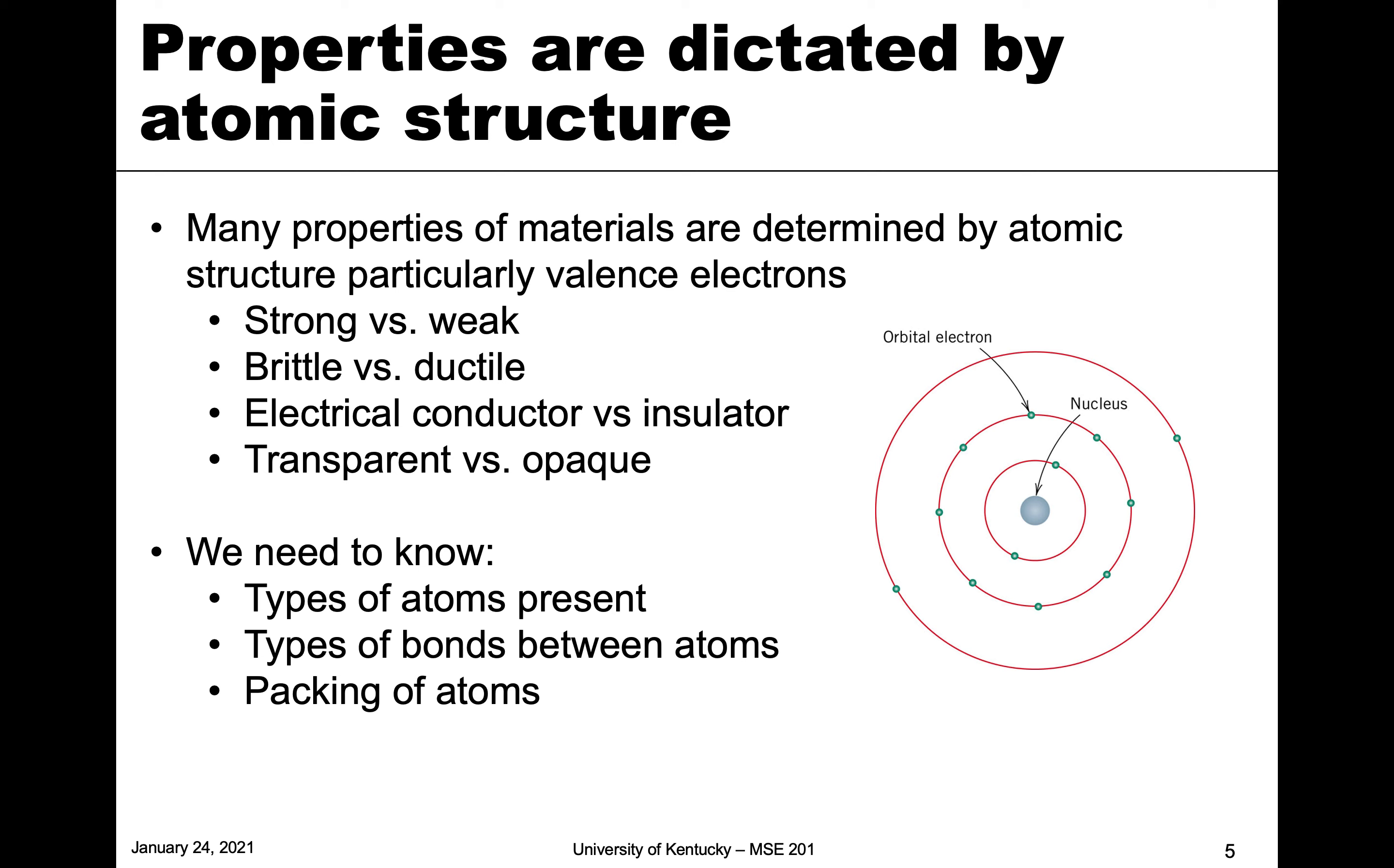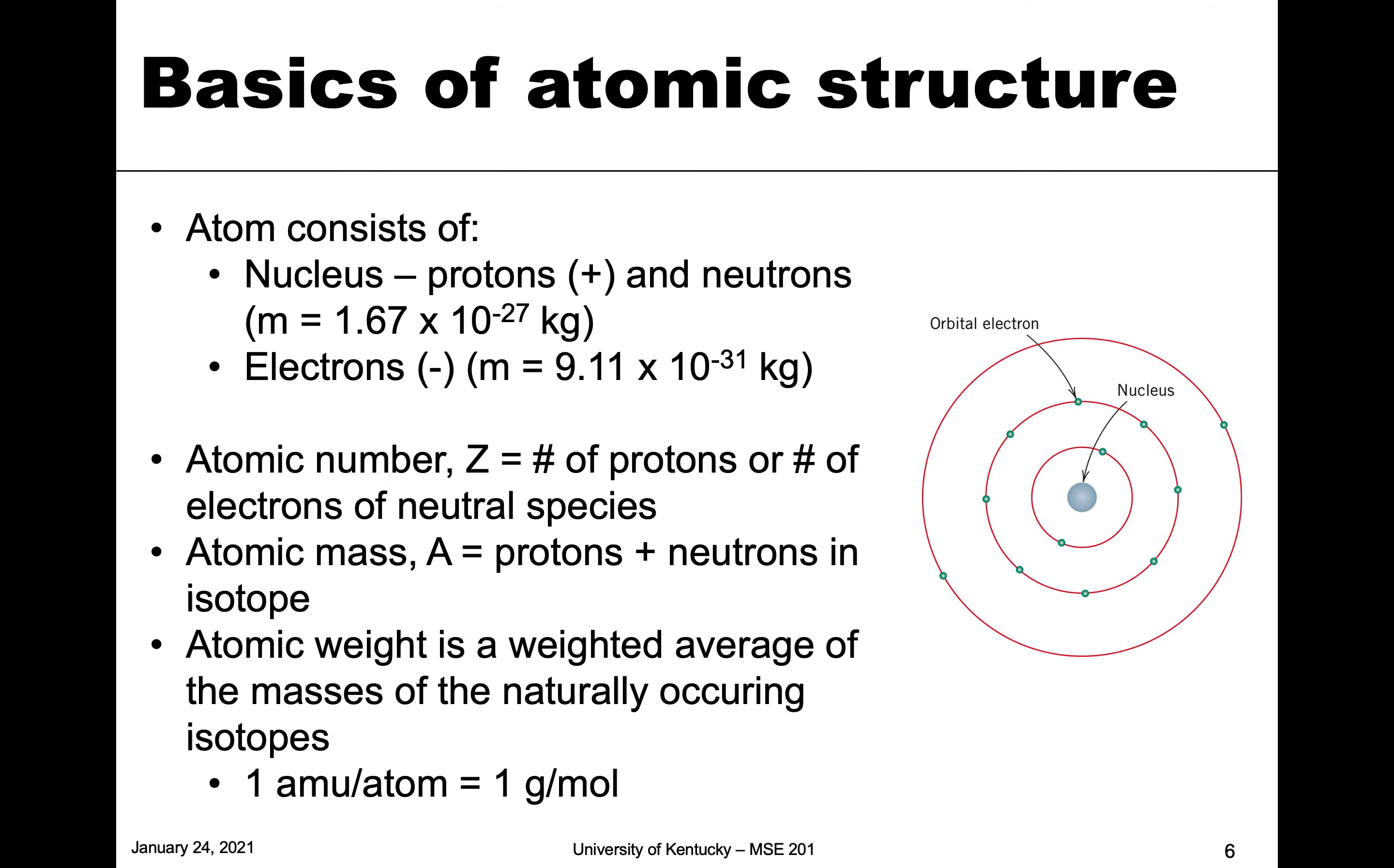This might be review, but let's look at the basics of atomic structure. The atom is composed of a nucleus. That nucleus in the middle has protons and neutrons, both of which have a mass as defined here. Then we have electrons orbiting that nucleus. The nucleus is positively charged from the protons, neutrons have no charge, whereas the electrons have negative charge and they're much lighter. Even though the units are kilograms, the order of magnitude is four times different, so electrons are much lighter and they're flying around the nucleus.